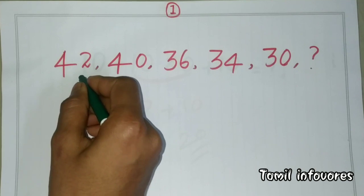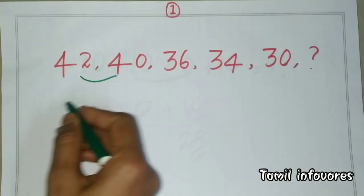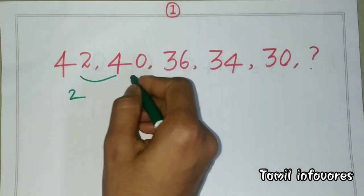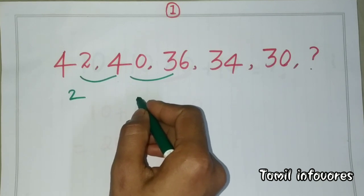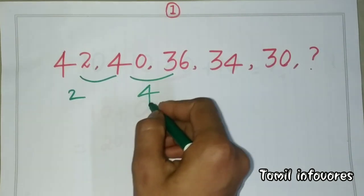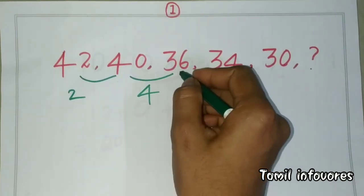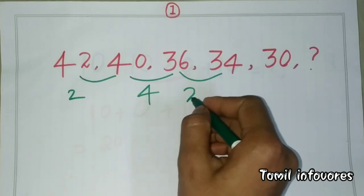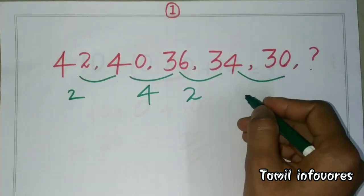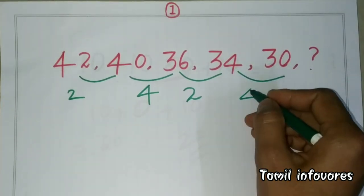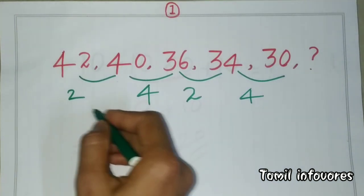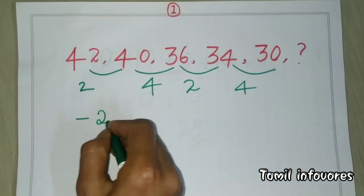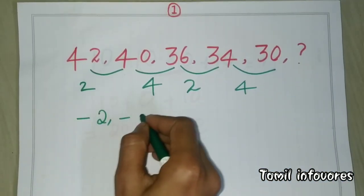I will tell you how different things are. Here are two different things. This is 40 and 34 — there are four different things. How many methods does this follow? It's like minus two, minus four.